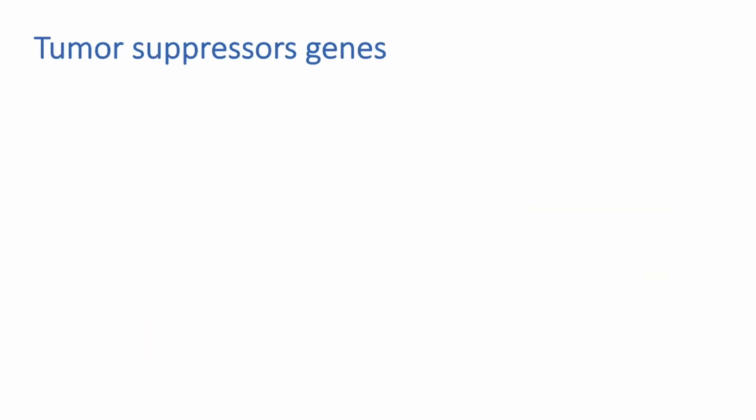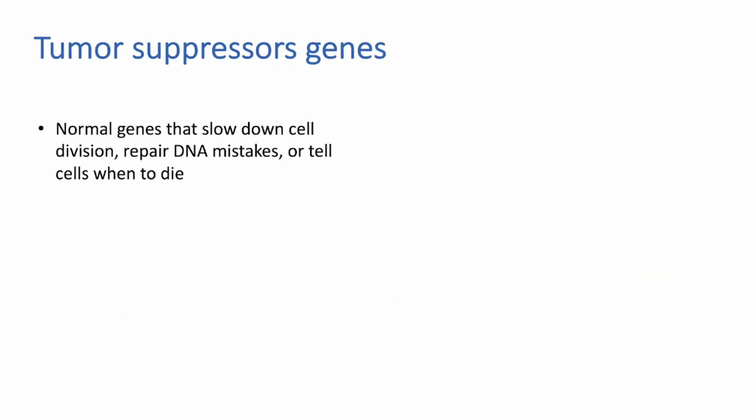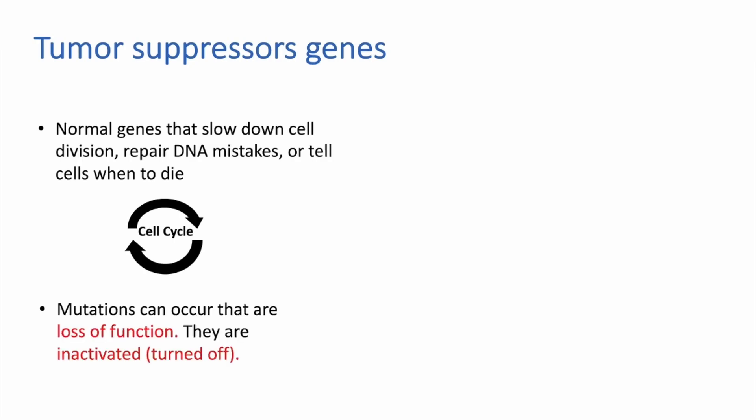Next, I'd like to introduce tumor suppressor genes. The American Cancer Society describes tumor suppressor genes as normal genes that help slow down cell division, repair DNA replication mistakes, or tell cells when to die. They can be thought of as the different safety features of the car. Tumor suppressor genes can have loss-of-function mutations, and as a result, they can be inactivated or turned off.